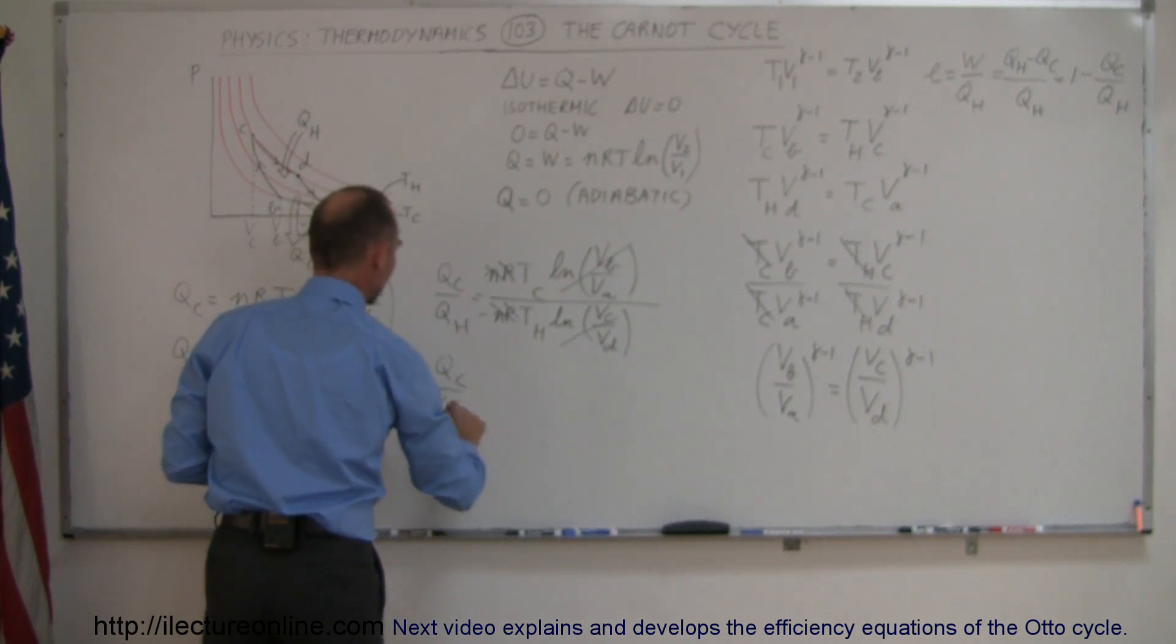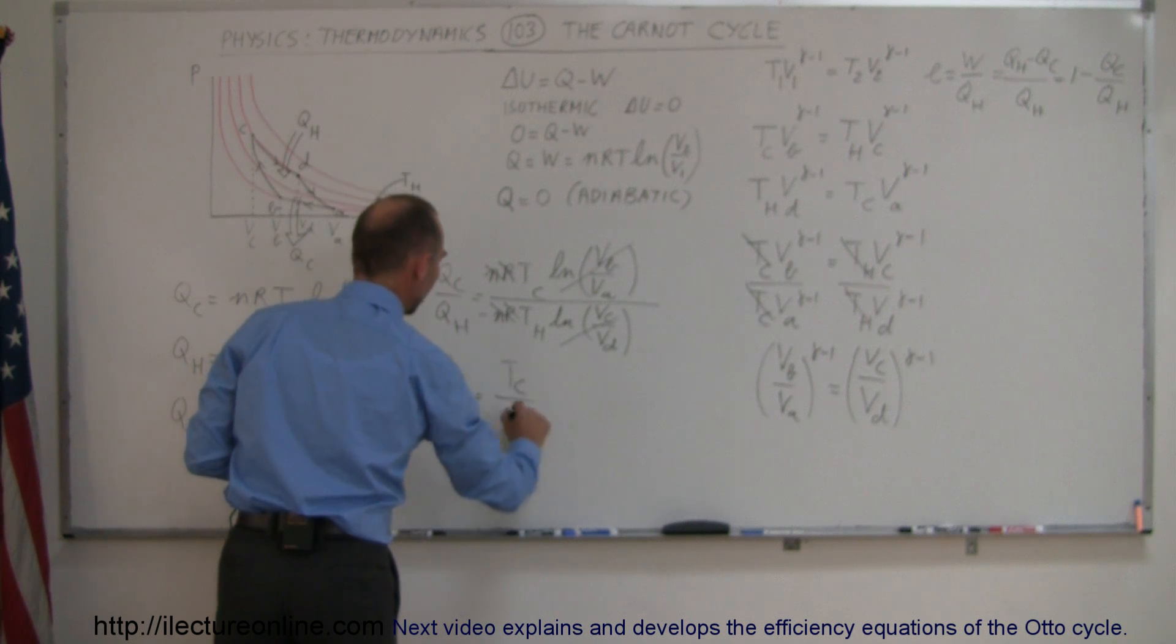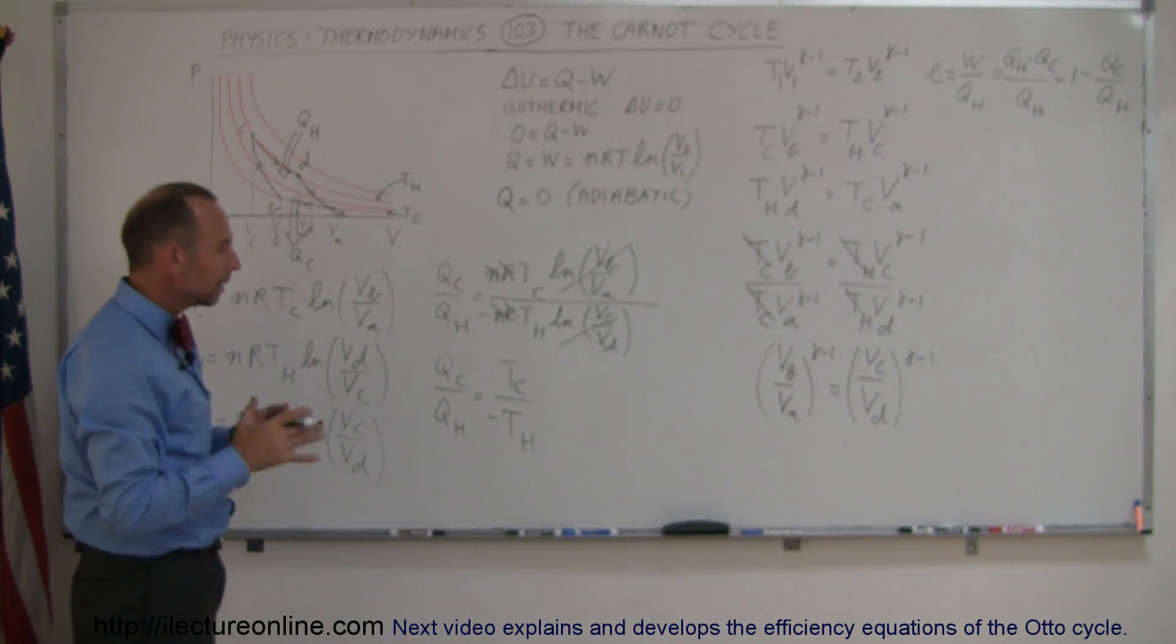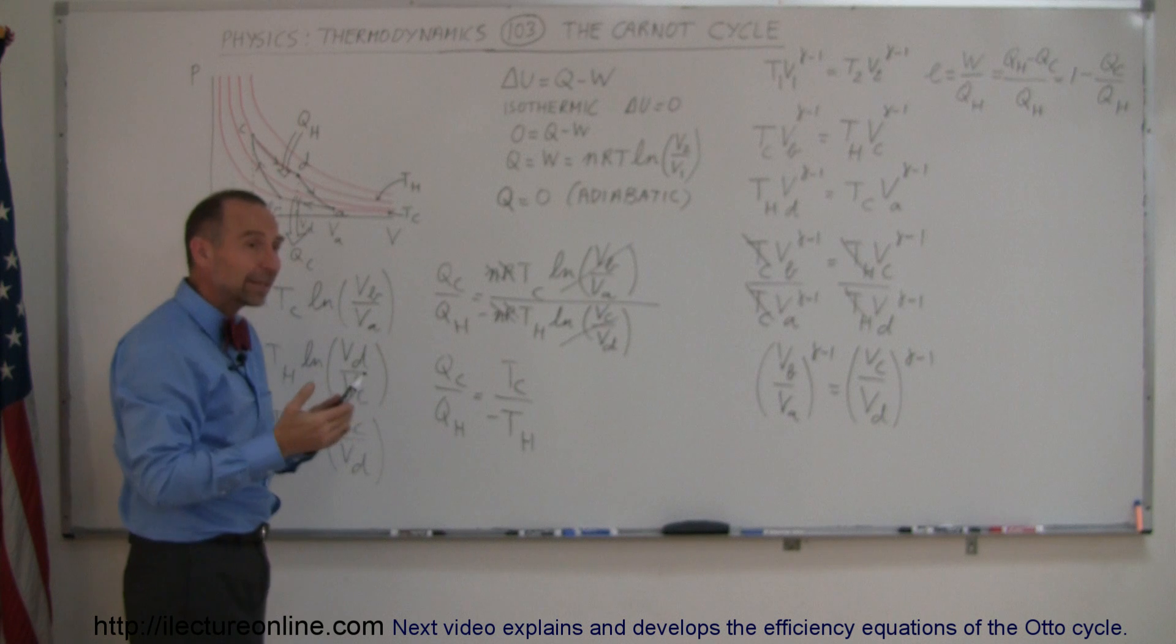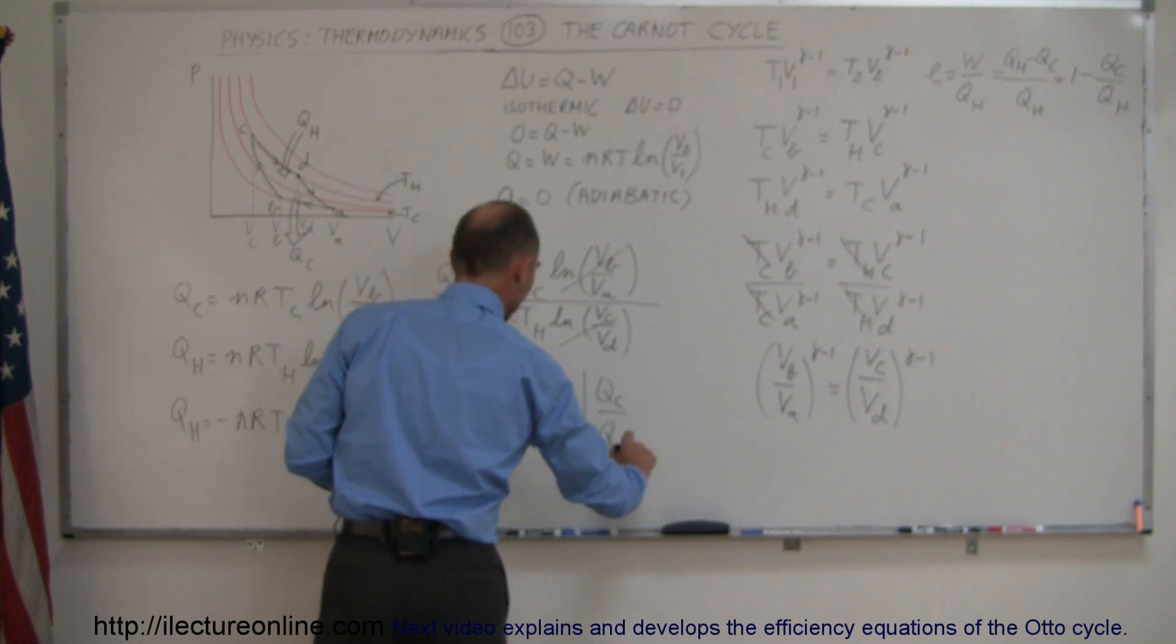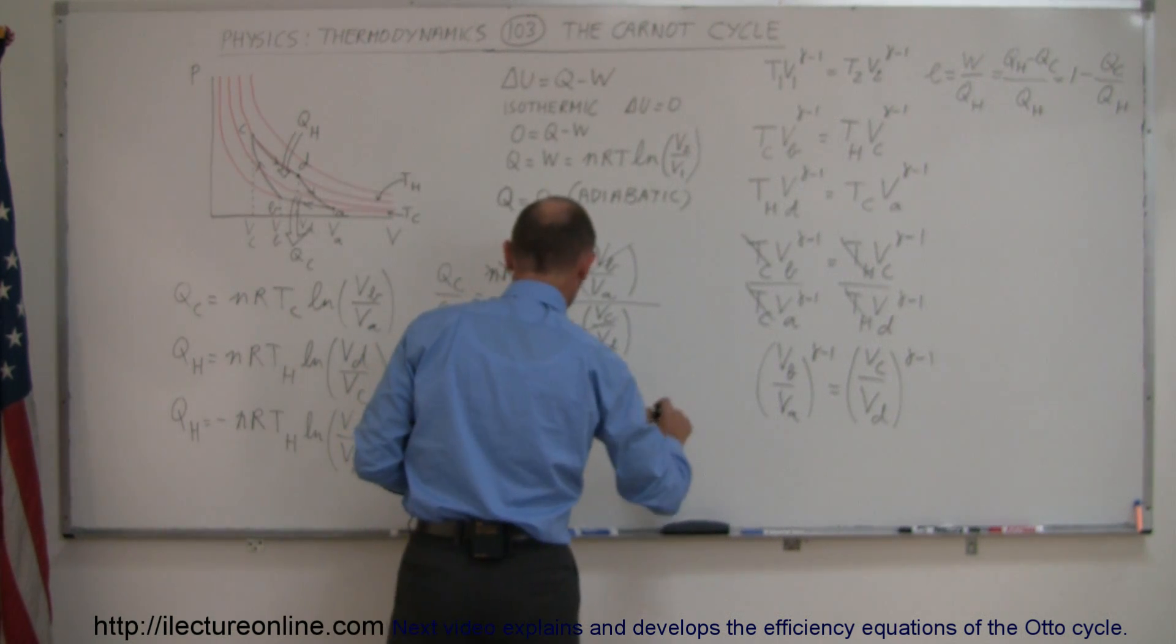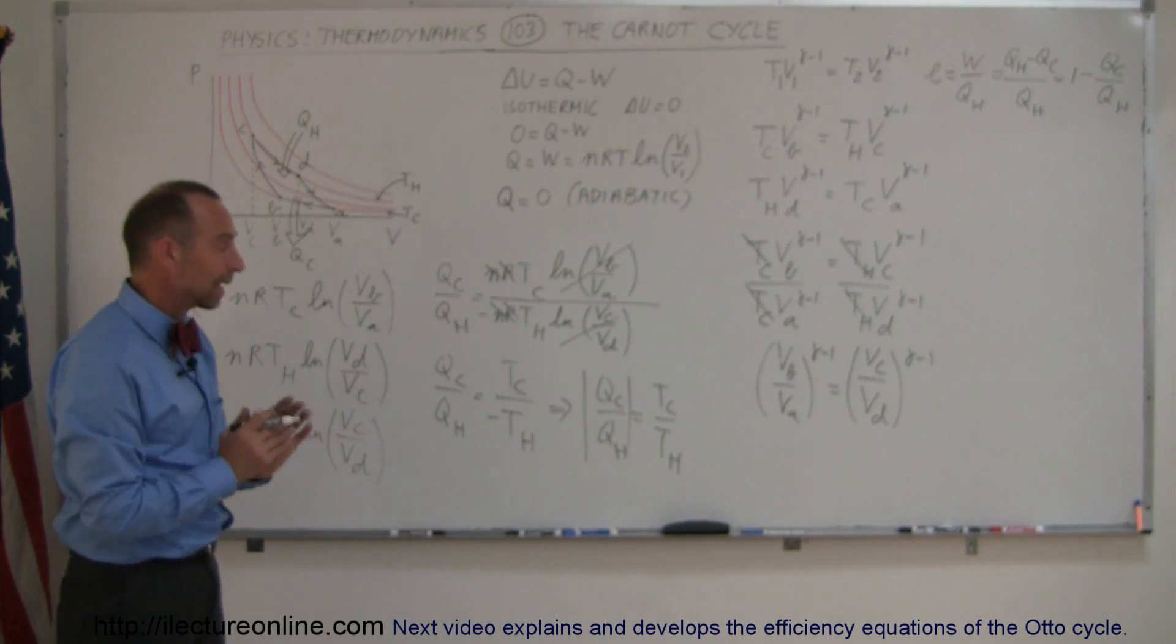And then I look at this equation: I can write that Q_c over Q_h is equal to T_c over T_h. Of course, don't forget the minus over there. Now, does the minus make sense? Well, it depends. Notice that if I only take the absolute value of the left side of that equation, because if I simply look at the quantity, not the sign, if I say the absolute value of Q_c over Q_h is equal to T_c over T_h as a positive quantity.